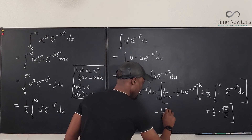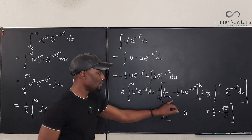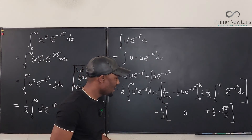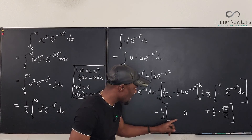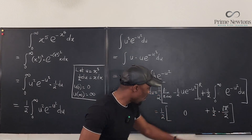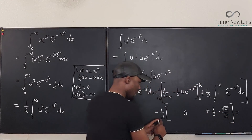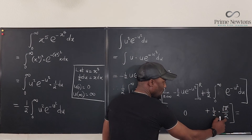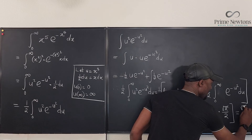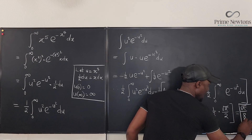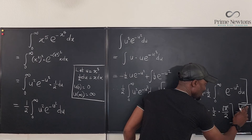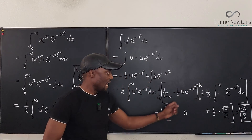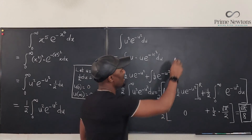The limit term evaluates to zero (shown next). So the result is one-half times square root of pi over 2, which equals square root of pi over 4. Multiplying by the one-half from our original substitution gives the final answer: square root of pi over 8.